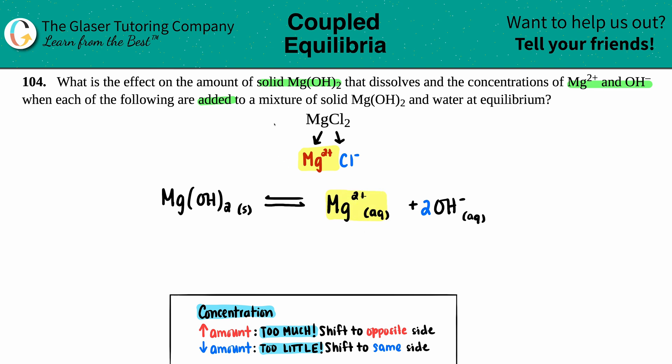So in essence, if we are adding MgCl2, that means the MgCl2 is going to increase. And because of that, the Mg2+ is going to increase. And because of that, we know that Mg2+ is going to increase here. So we answered one out of the three questions.